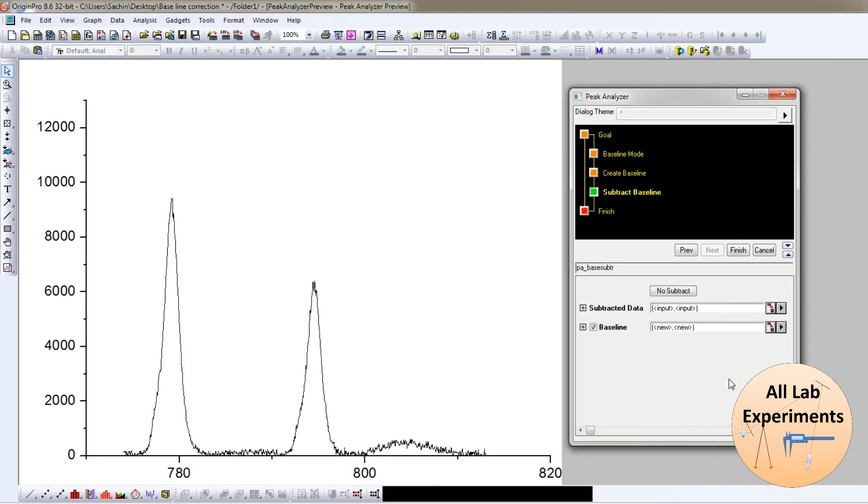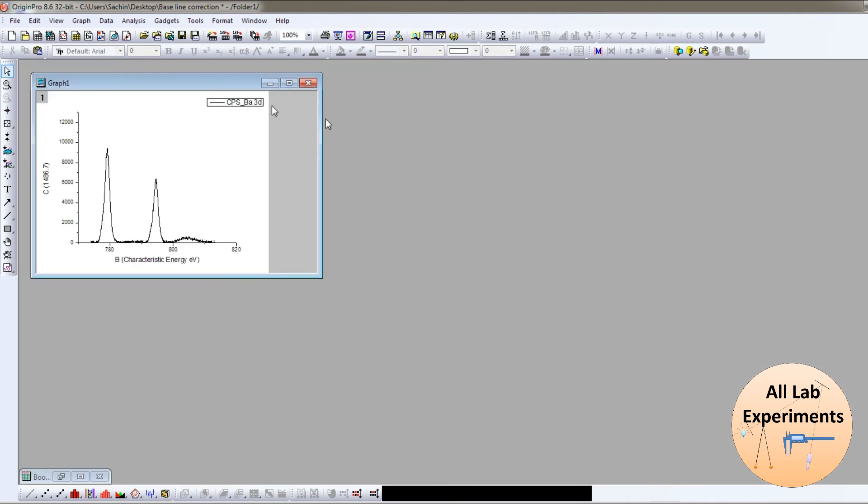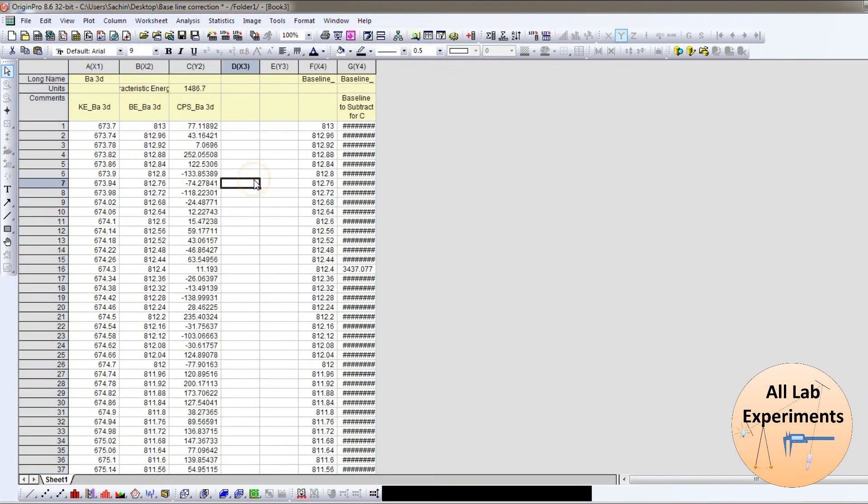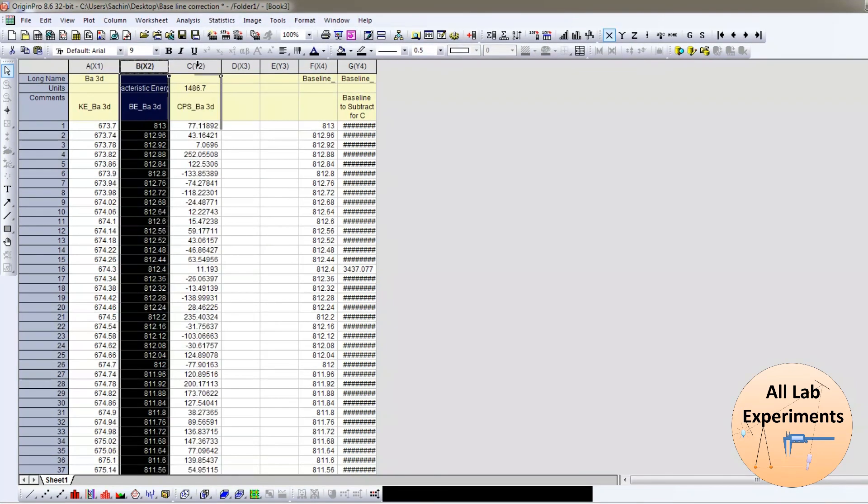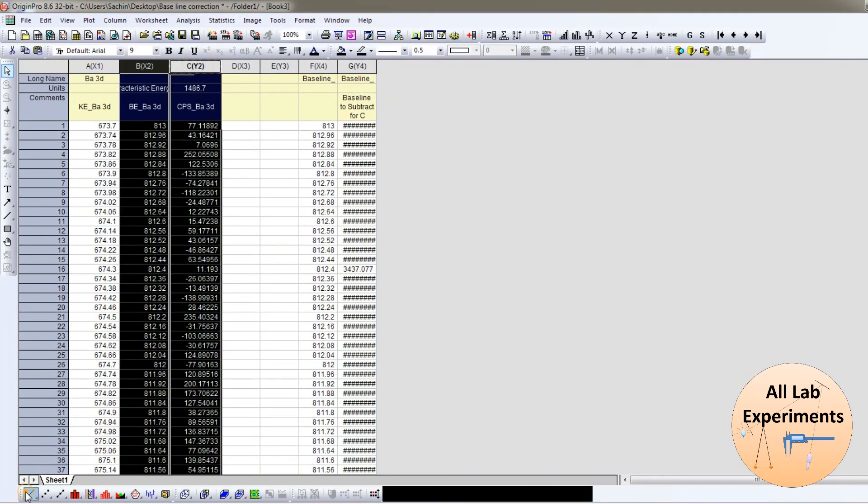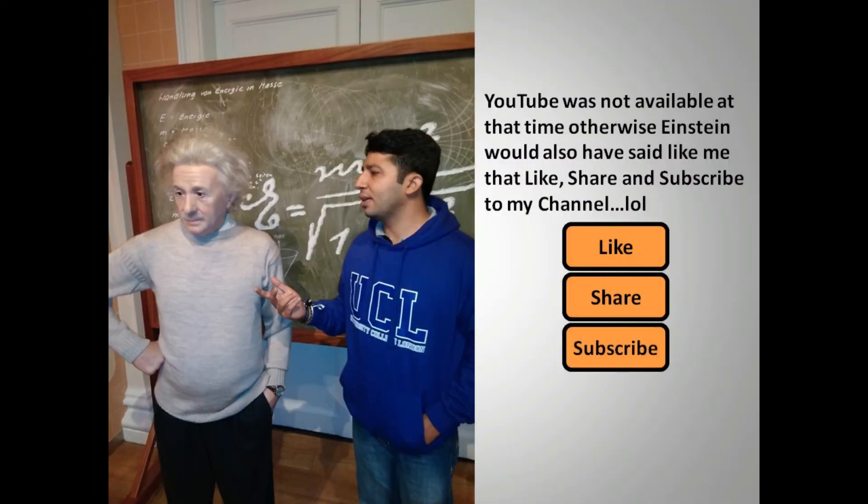This is your data after baseline correction. If you look at this data, we will find that this is not the data we started with. This is the data after subtracting the baseline data which we obtained after fitting. If I plot this, I am getting this data which I have obtained after baseline fitting. In this way you can fit the baseline of either your Raman data, your XPS data, or similarly many others. Thanks for watching. If you like this video, please don't forget to like, share, and subscribe. Thank you.